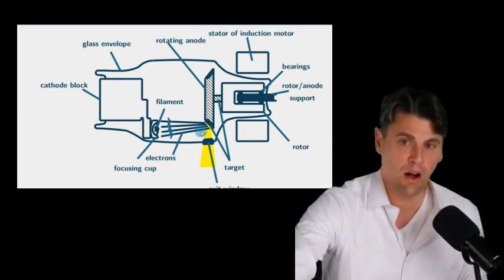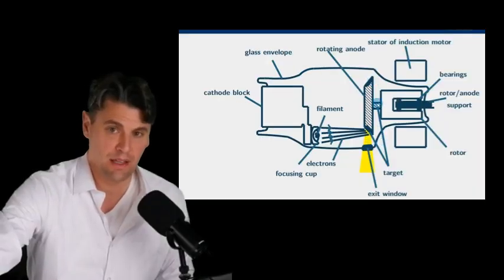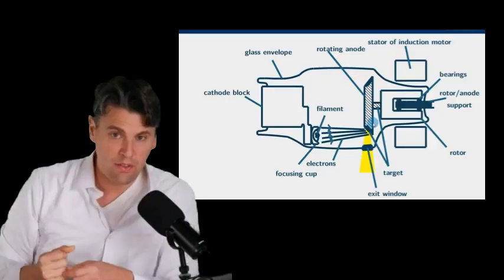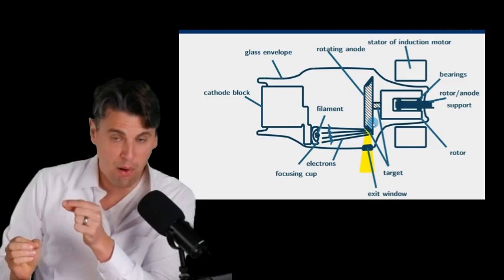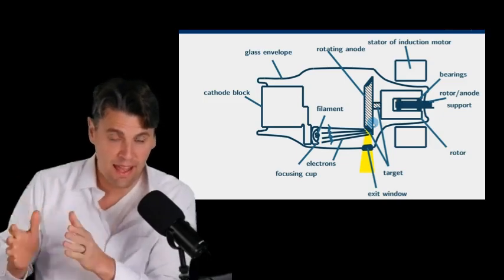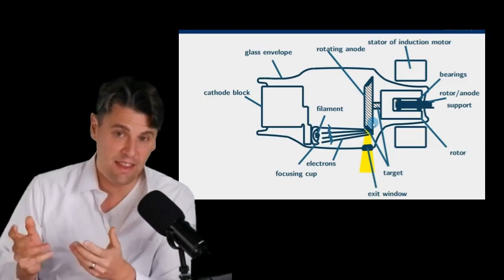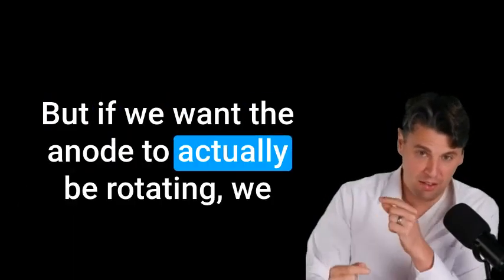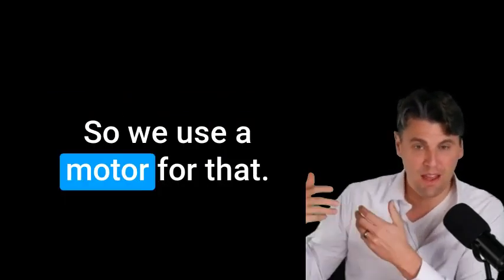On modern tubes we also have this anode. Instead of being just a stationary piece of metal, it's actually going to rotate around so that we have more ability to hit different parts on that anode so that the anode gets a chance to cool. Thus we can have a higher incident on the anode without melting the anode. But if we want the anode to actually be rotating, we need something to make that anode rotate. So we use a motor for that.